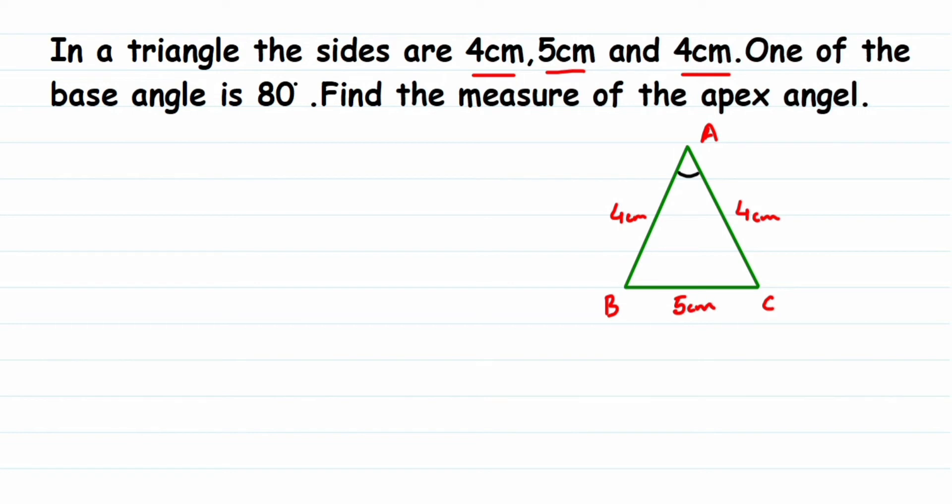We also know that in an isosceles triangle, base angles are equal. Now, what is the base angle? Here this is my base, right? The angles made by them—this angle and this angle—are called base angles. They have given that one of the base angles is 80 degrees. So if one of the